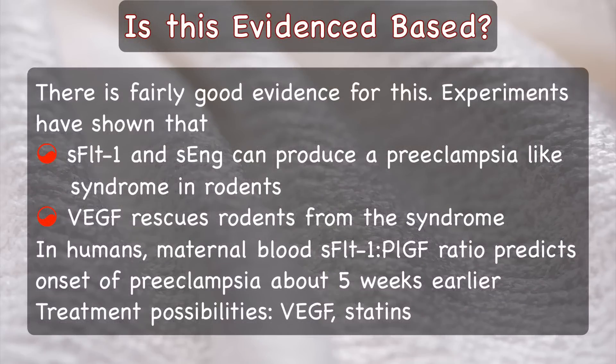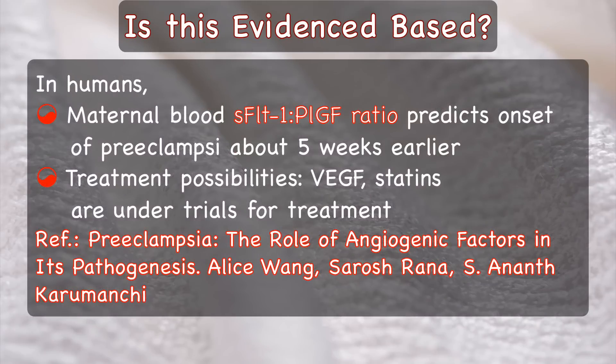Is this evidence-based? Yes, there is fairly good evidence for this. Experiments have shown that sFLT-1 and soluble endoglin can produce a pre-eclampsia-like syndrome in rodents, and that vascular endothelial growth factor rescues rodents from the syndrome. In human beings, maternal blood sFLT-1 and placental growth factor ratio predicts onset of pre-eclampsia about 5 weeks earlier. This also has treatment possibilities. Vascular endothelial growth factor and statins are now being experimentally used in treatment of pre-eclampsia.